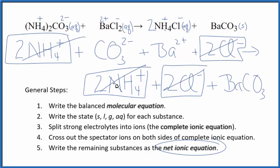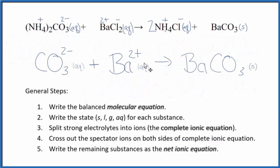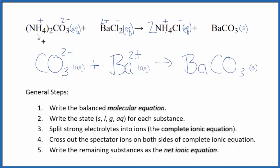I'll clean this up. Write the states in. I didn't do that. And then we'll have our net ionic equation. And this is the balanced net ionic equation for ammonium carbonate plus barium chloride.